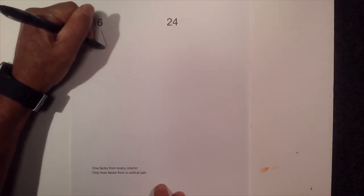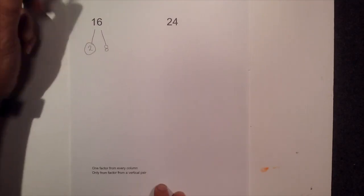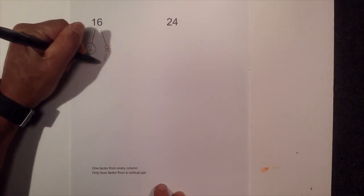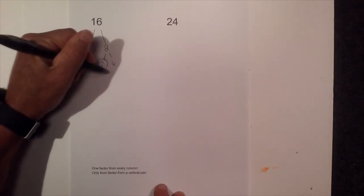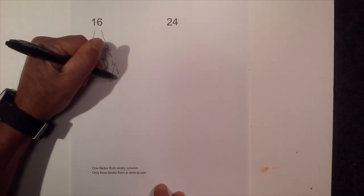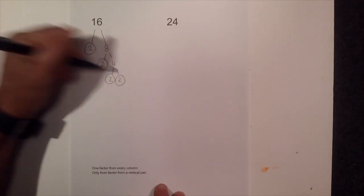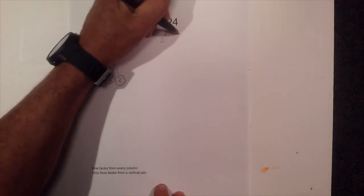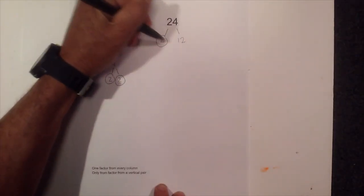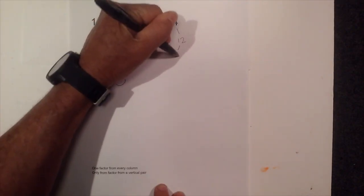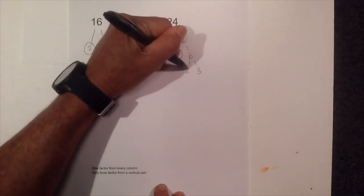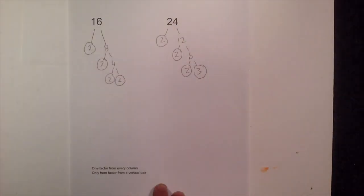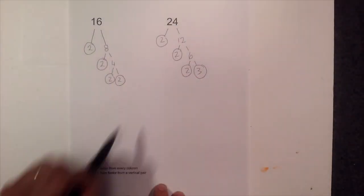So with 16, I am going to go 2 times 8. Circle the 2 because it is prime. Now 2 times 4 equals 8. Circle the 2 because it is prime. And then 2 and 2. And then 2 times 3. Circle both of these. So now I have it down and I have all the prime numbers identified.